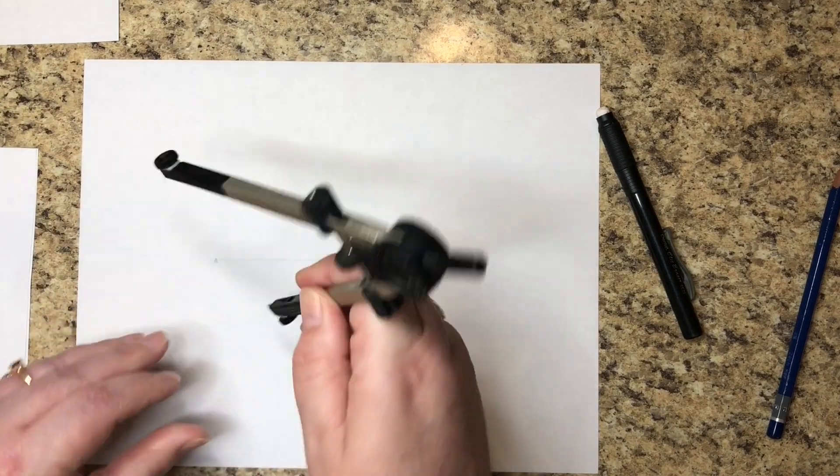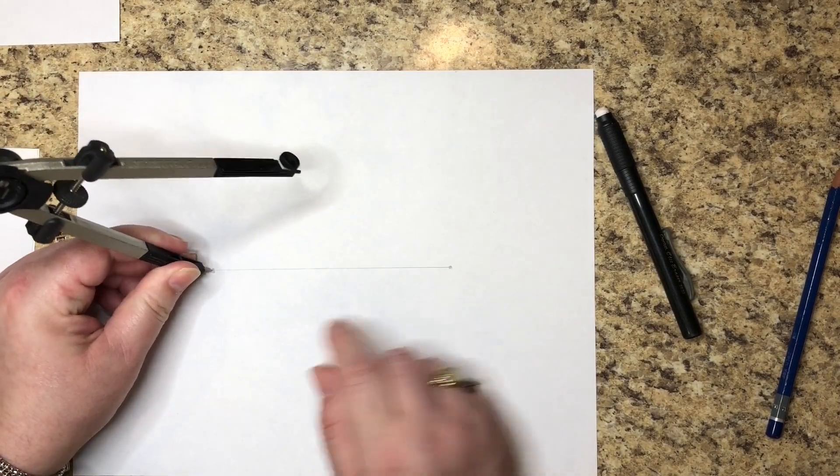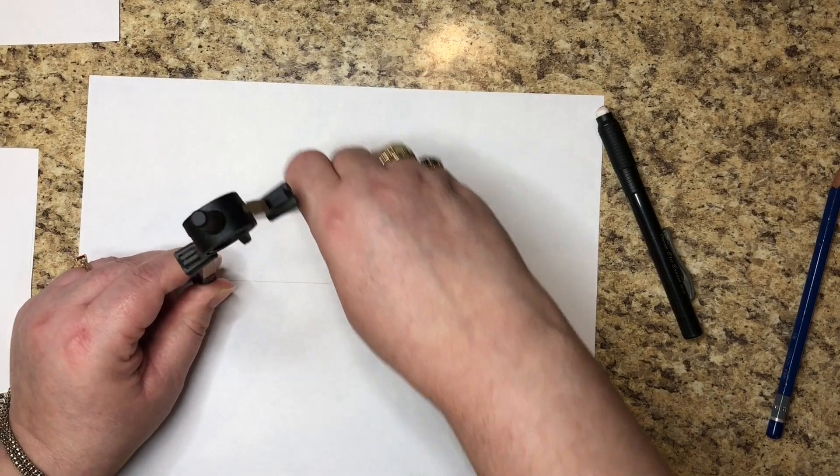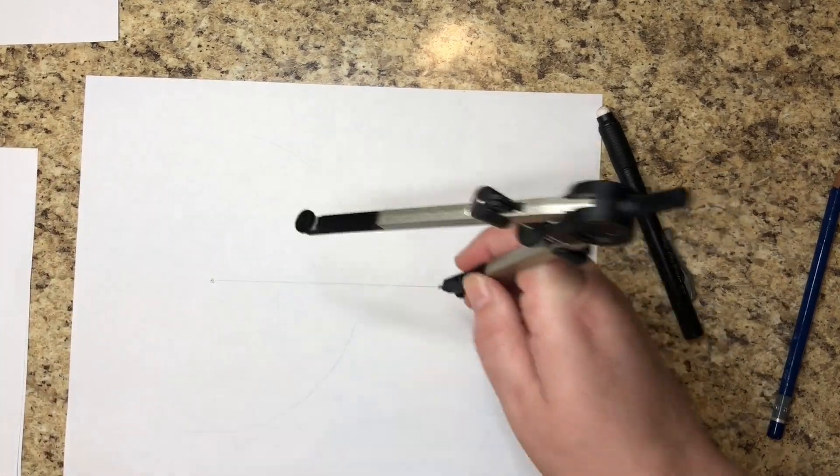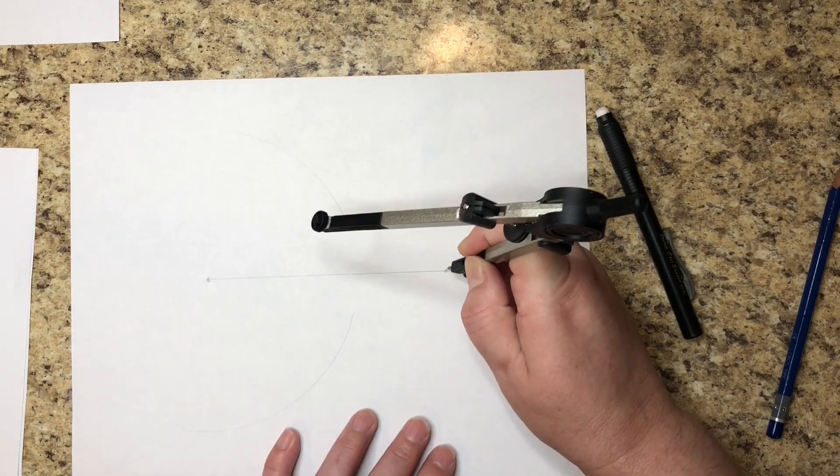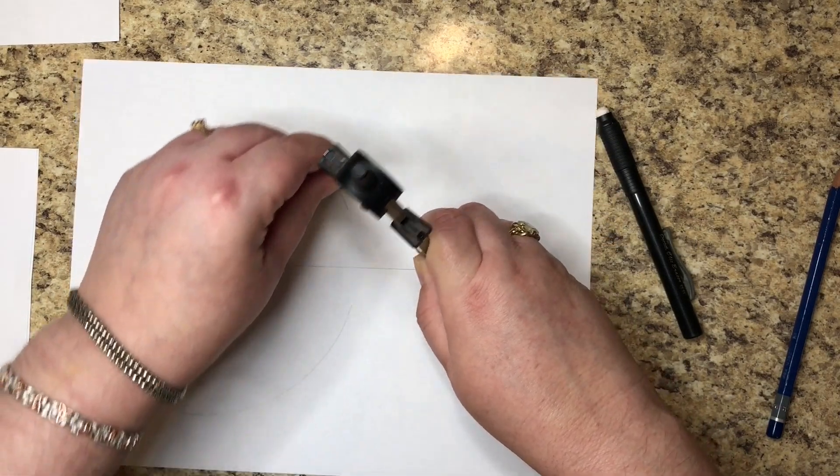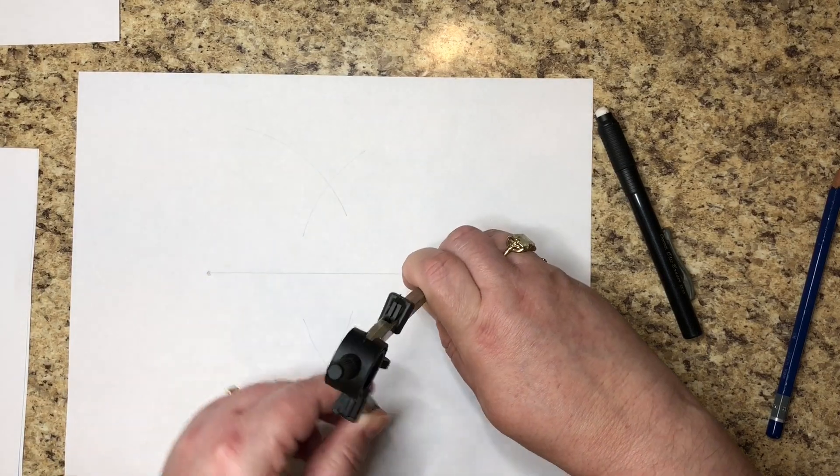There we go, that should do. All right, we are going to put your point on one end, create an arc above and an arc below. Move to the other side, put your point on the other side.